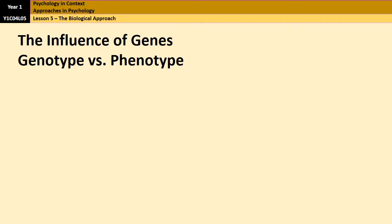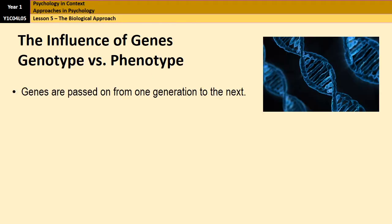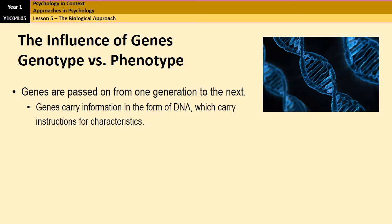So we'll start off with genes. Genes are passed on from one generation to the next, and when they're passed on, they take with them information in the form of DNA, which carries instructions for certain characteristics. Now whether those characteristics are physical, or to do with your personality, or to do with your behaviour, they all get carried in the form of DNA.